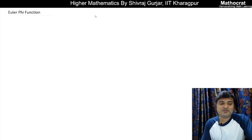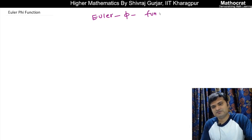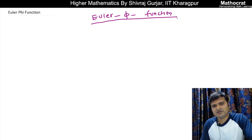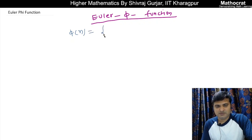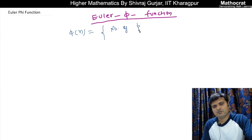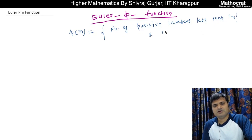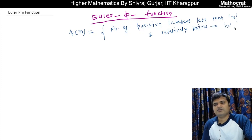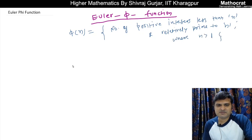Let us discuss the Euler Phi function. φ(n) denotes the number of positive integers less than n and relatively prime to n, where n is greater than 1. This is its definition.